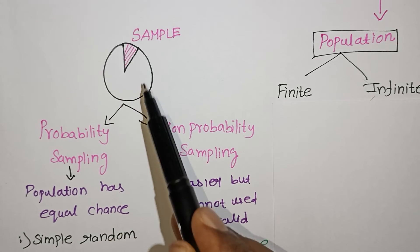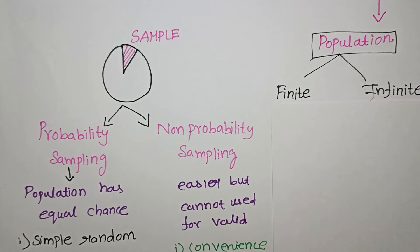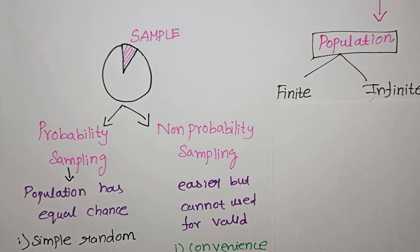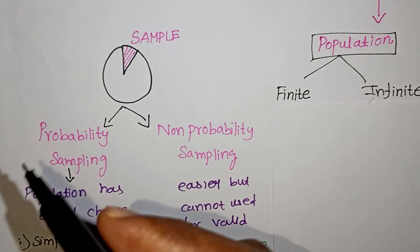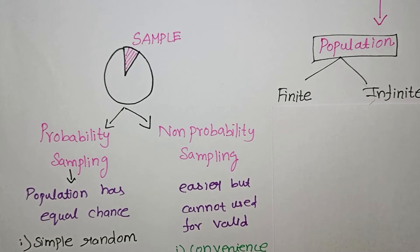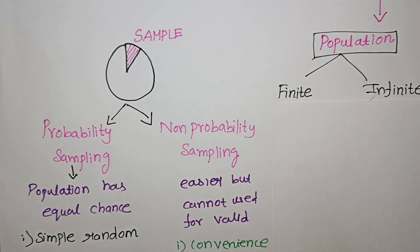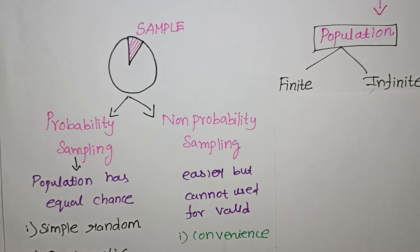The advantage of probability sampling is that every member of the population has an equal chance of selection. There are 4 types of probability sampling and 4 types of non-probability sampling.